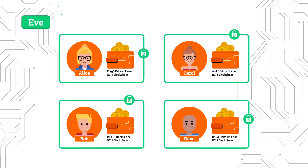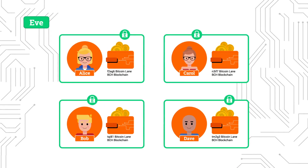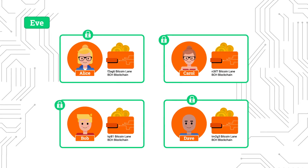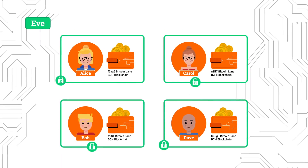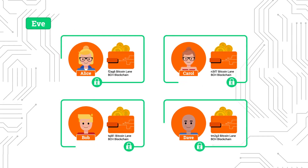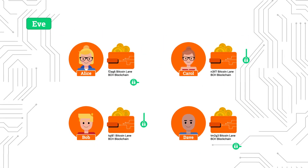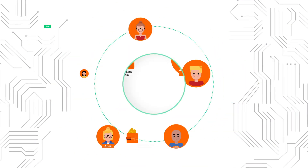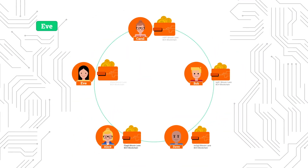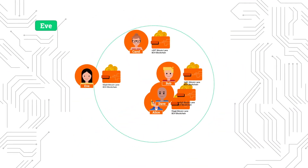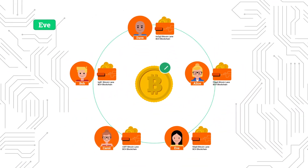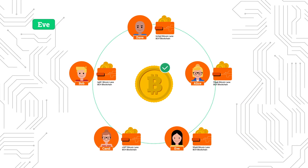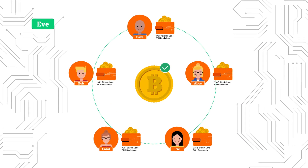The last shuffler, Eve, will receive every other participant's address, encrypted with only her key. She then decrypts all the addresses, adds her own to the list, randomizes the order one more time, and announces the list of addresses for all other shufflers to see.